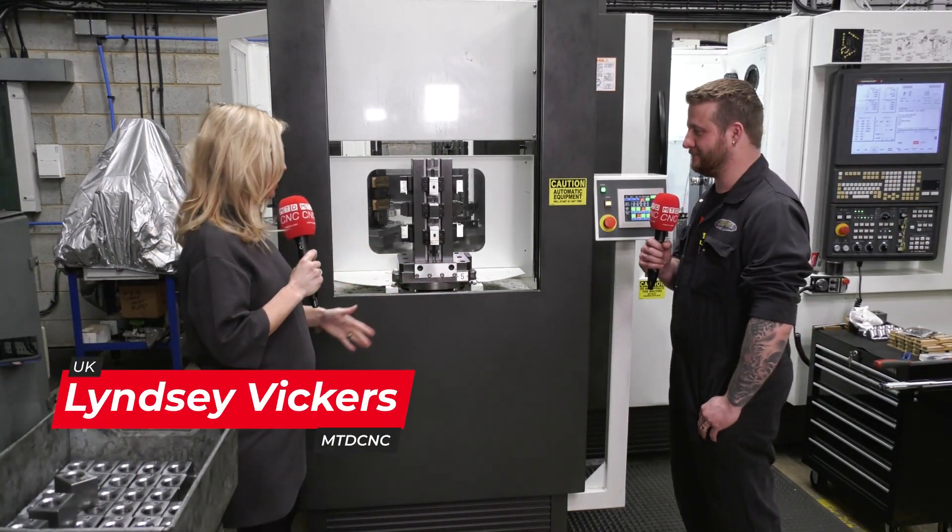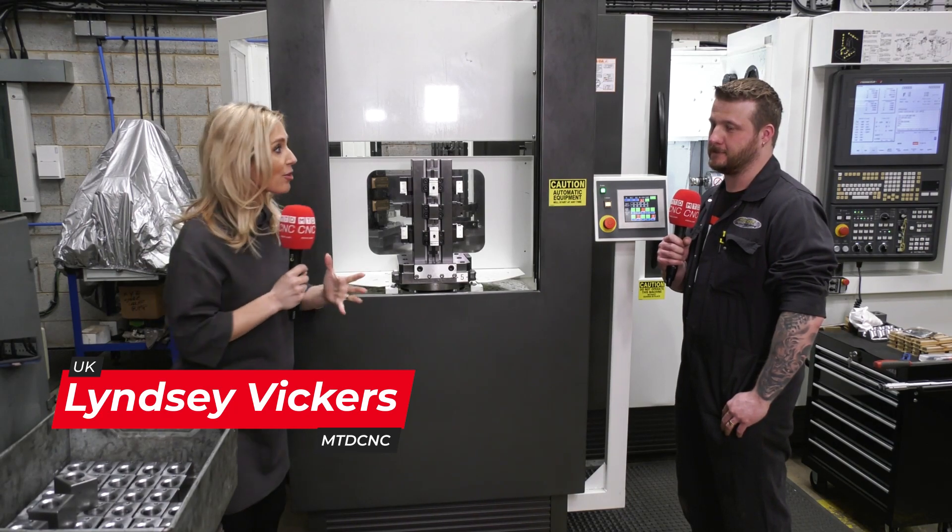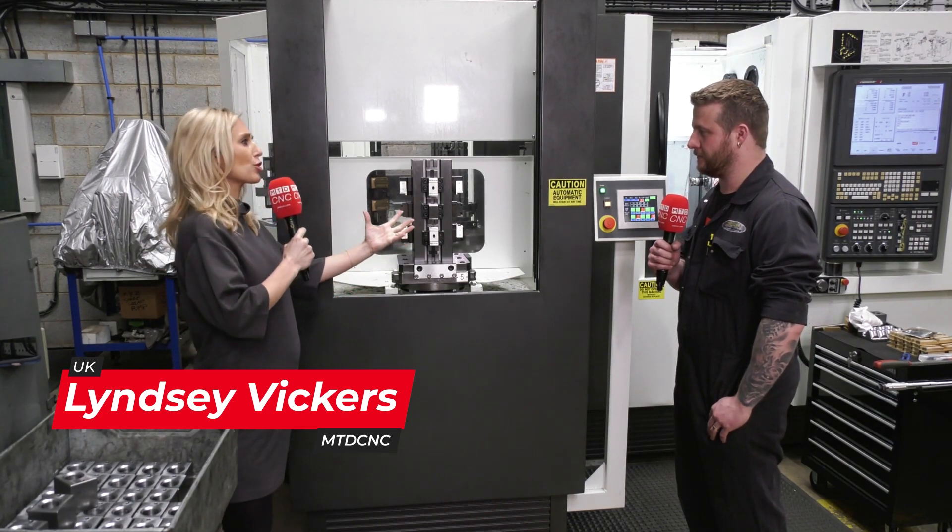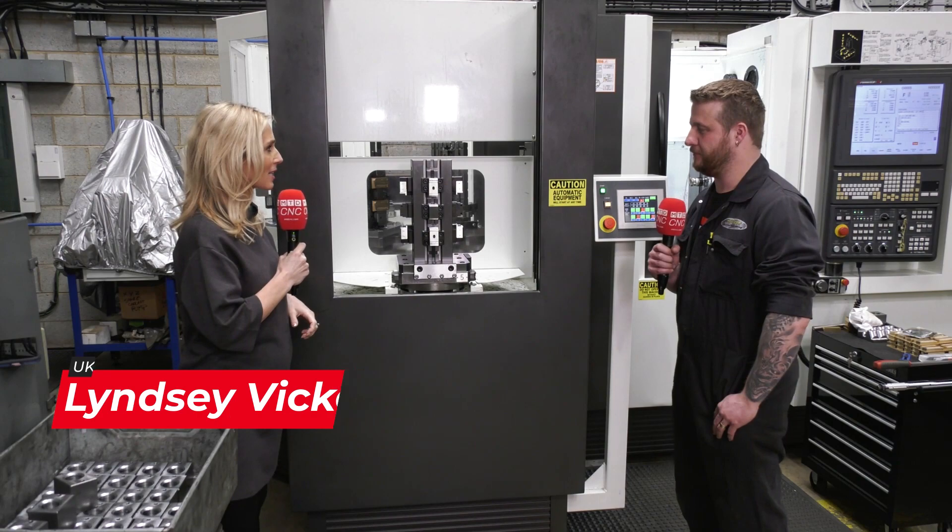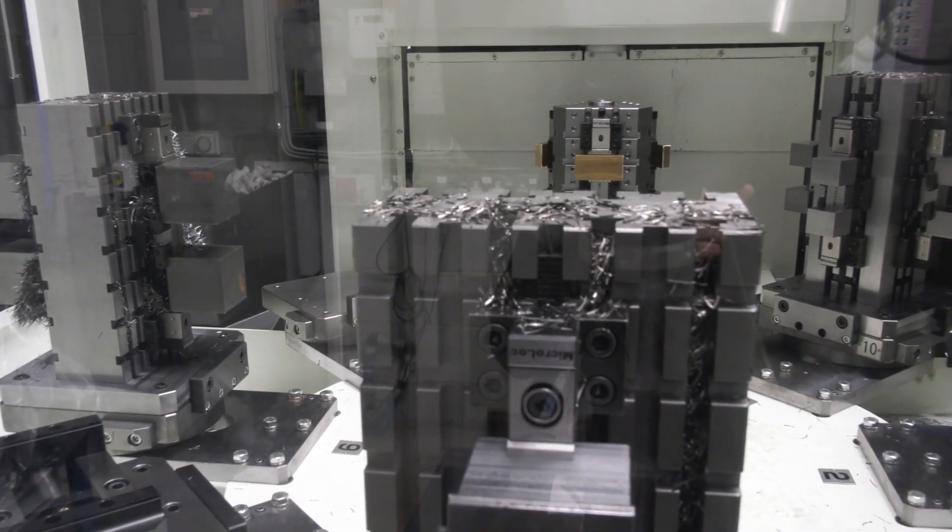Darren at HighSpec Precision has recently invested in not one, not two, but three different styles of micro lock work-holding. Can you explain which areas you've covered? We've gone for six towers: two tombstones, two cubes, and two triangles.